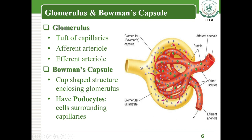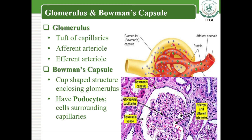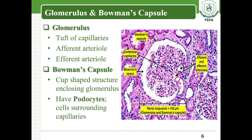The Bowman's capsule is a cup-shaped structure enclosing the glomerulus. The cells of the Bowman's capsule that surround the glomerulus and its capillaries are known as podocytes. This diagram shows the actual section of the human kidney, displaying the glomerulus, Bowman's capsule, and the afferent and efferent arterioles.